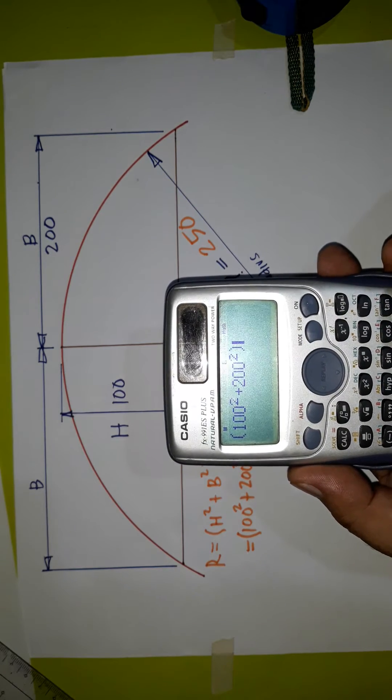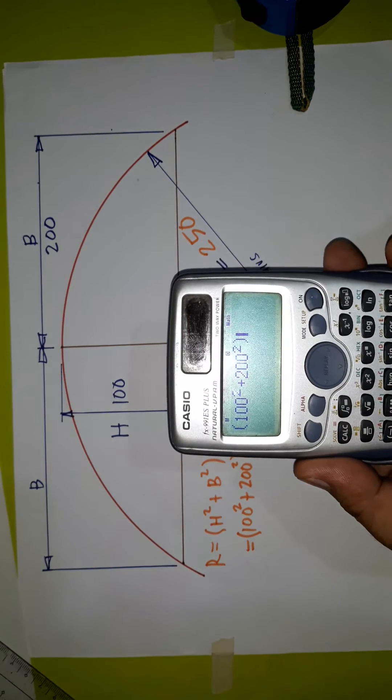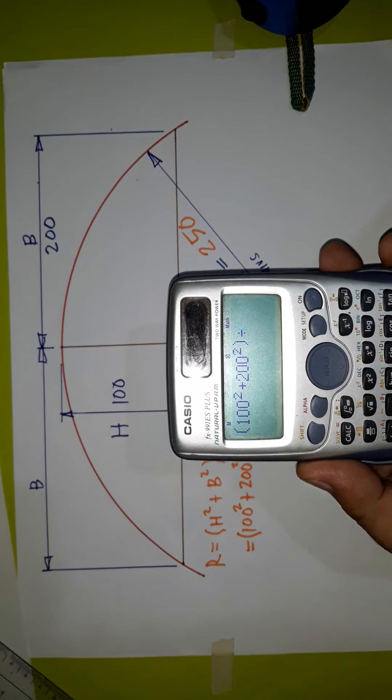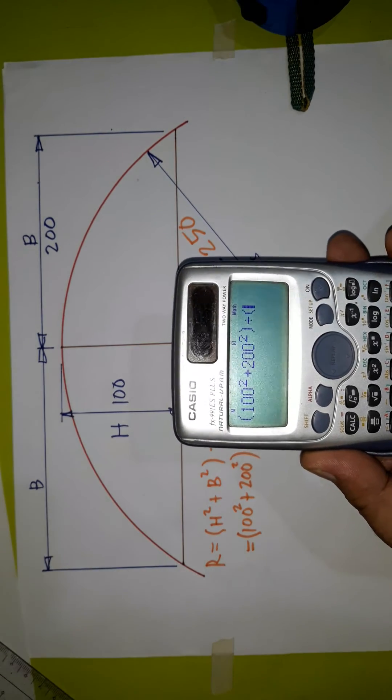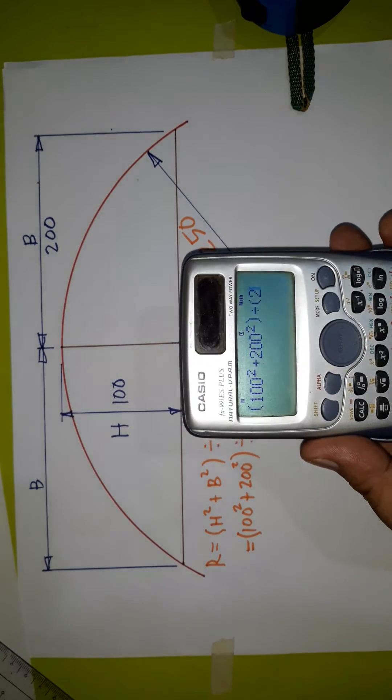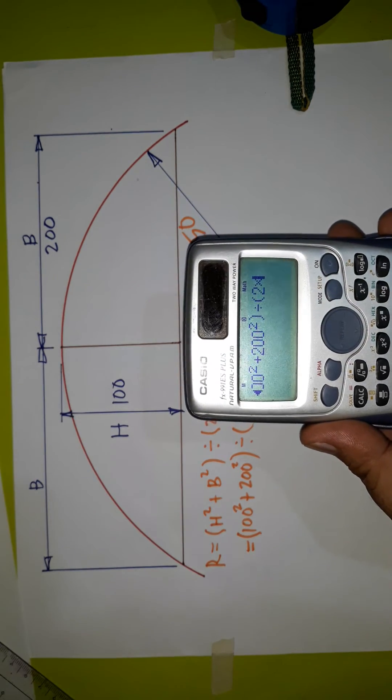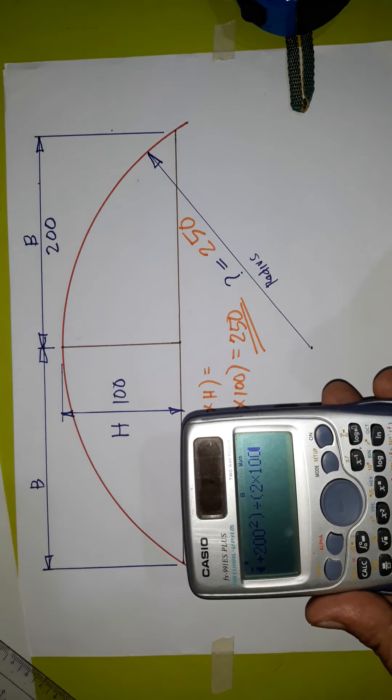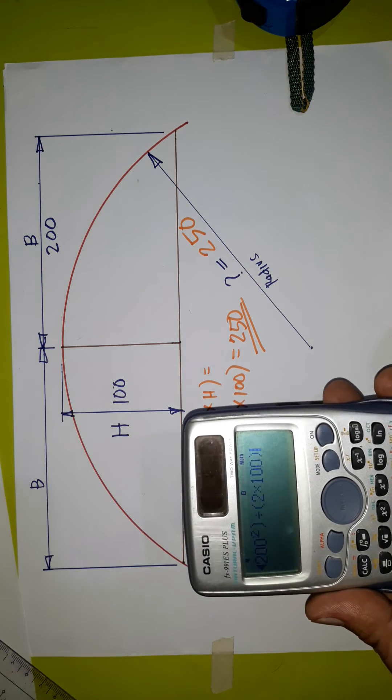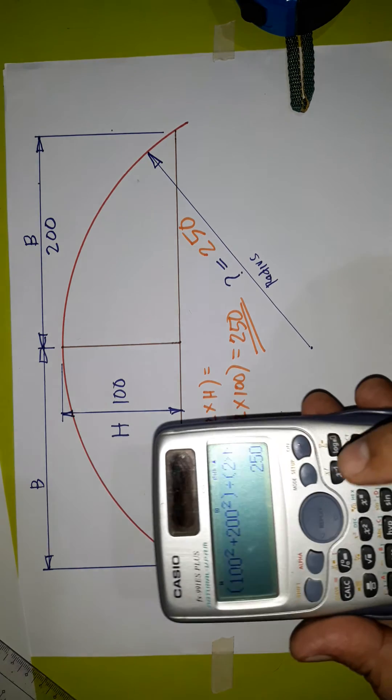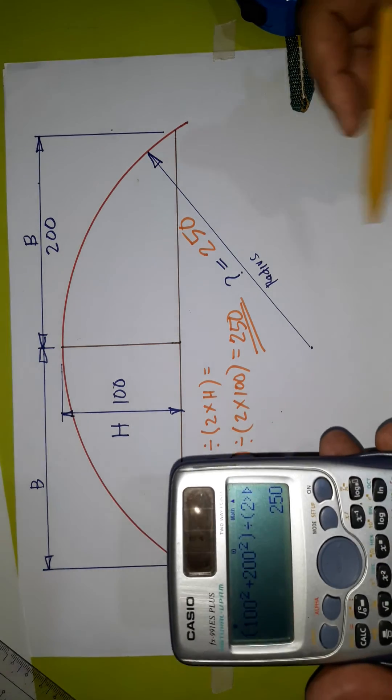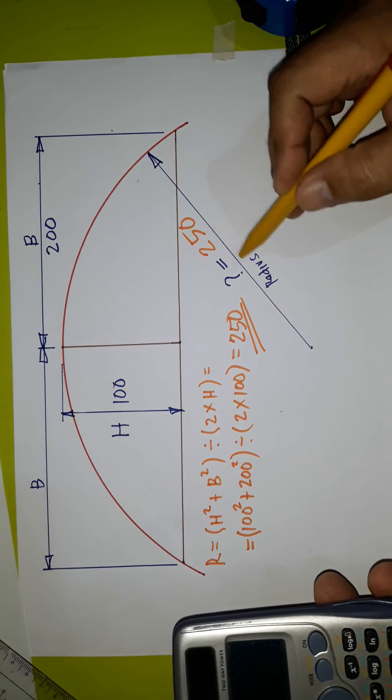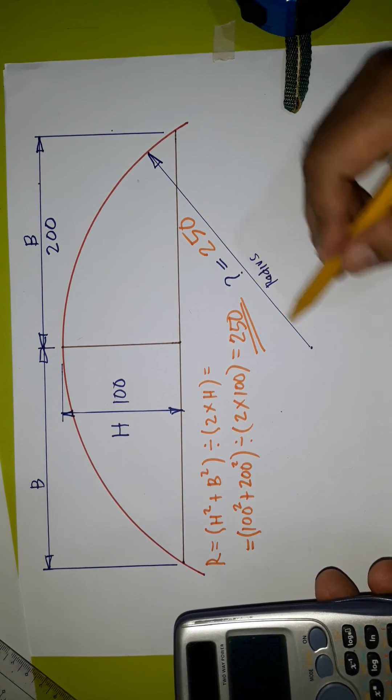And close parenthesis, divide by open parenthesis, 2 times 100, and we close. Then equal. So the answer is 250. So this is now 250, the radius.